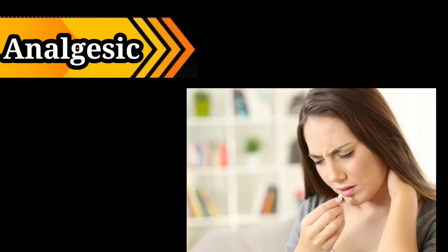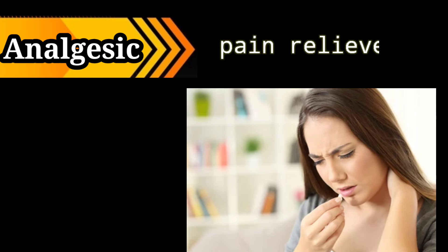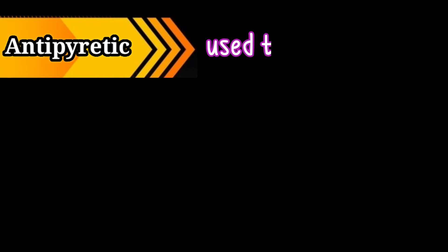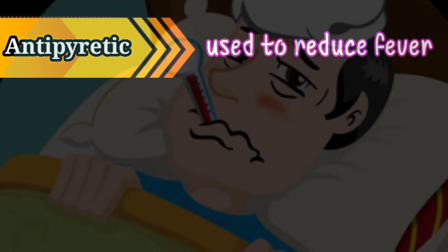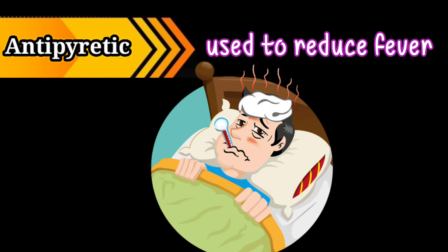Today our topic is about common medical terms. Analgesic: a pain-relieving medicine that reduces pain — for example, paracetamol is used as an analgesic. Antipyretic: used to reduce fever — for example, paracetamol or Dolo is used as an antipyretic.